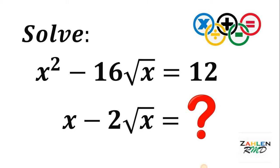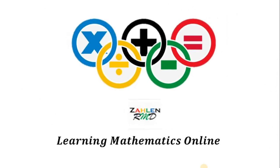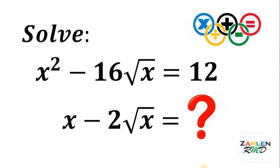Good day, everyone. Here's our math challenge for today. Our goal is to solve for the value of x minus 2 times square root of x, given that x squared minus 16 times square root of x equals 12. If you want to try this problem, just pause this video right now. And if you're ready, here's the solution.